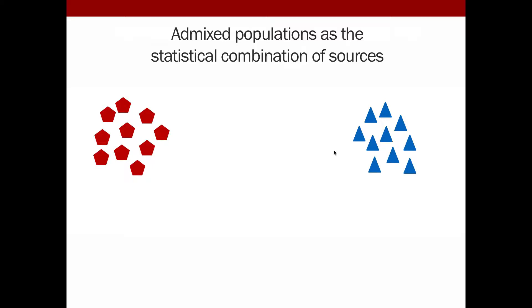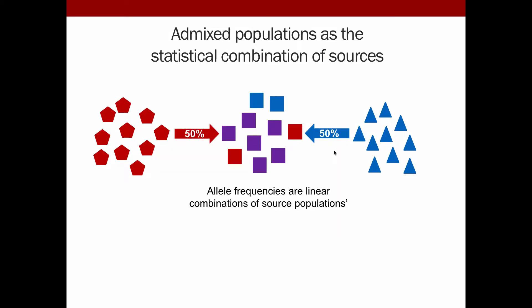Admixed populations have classically been thought of as statistical combinations of their source populations. We have, say, source population one of red pentagons, source population two of blue triangles. They mix to create the squares, these admixed populations, and we consider their allele frequencies as linear combinations of the allele frequencies in the source populations.